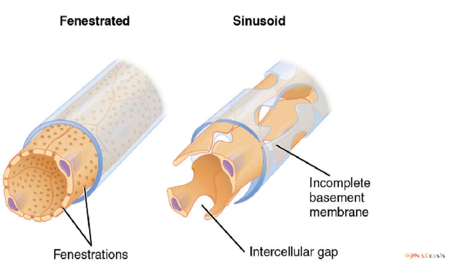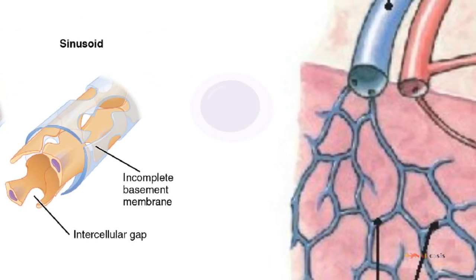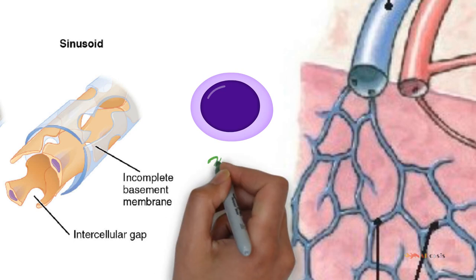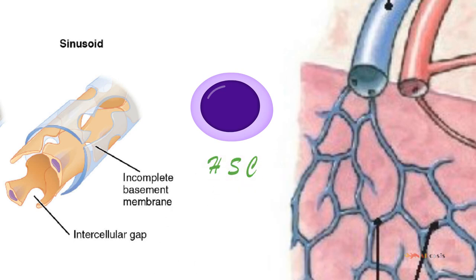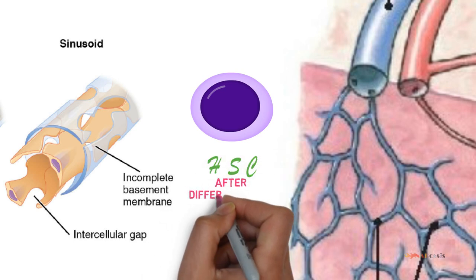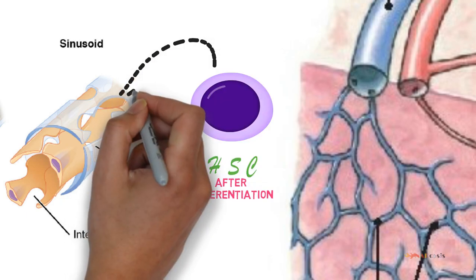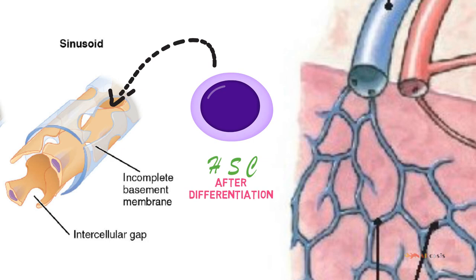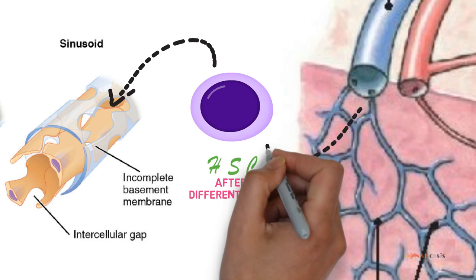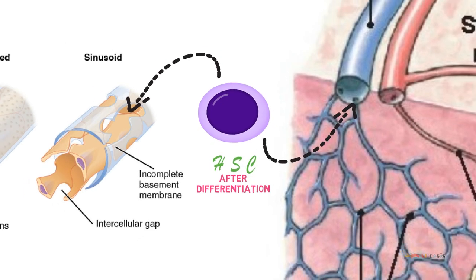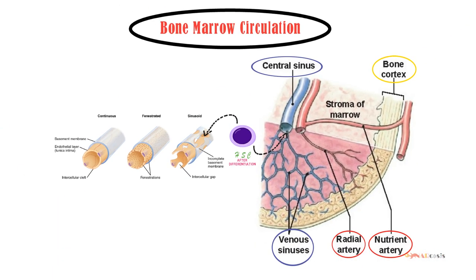The last type of capillaries is the sinusoid which has incomplete basement membrane and there are gaps between the endothelial cells called intercellular gaps. The escape of developing hematopoietic cells into the sinus for transport to the general circulation occurs through these gaps that develop in the endothelial lining, and also even through the endothelial cell cytoplasmic pores.